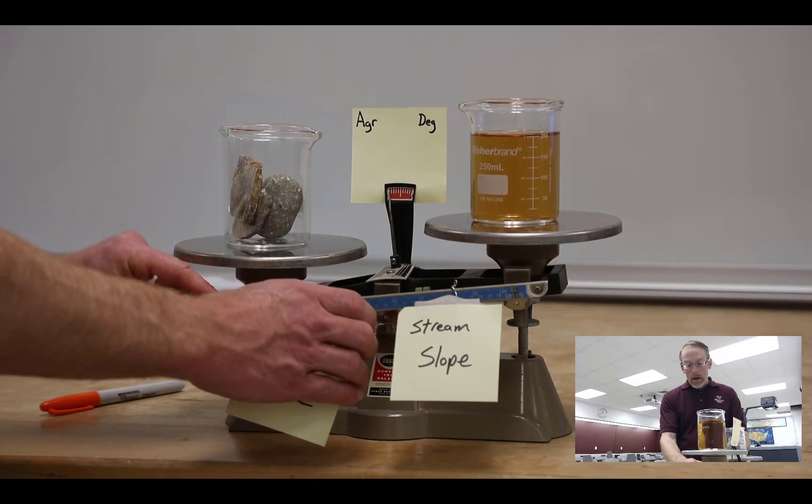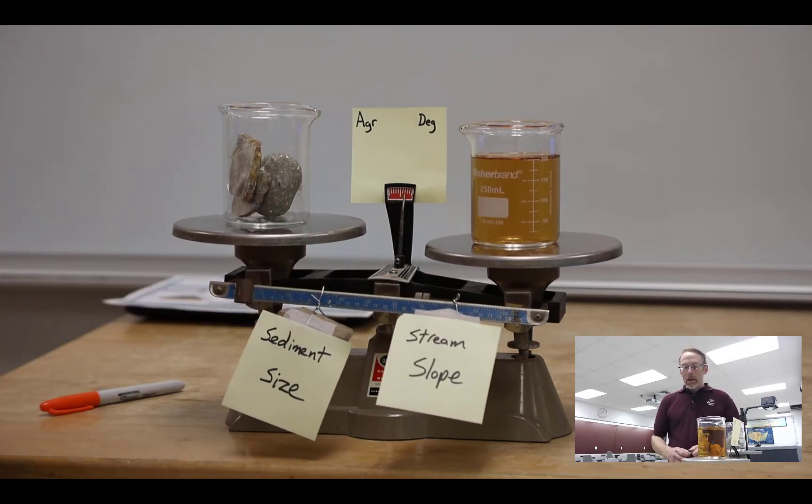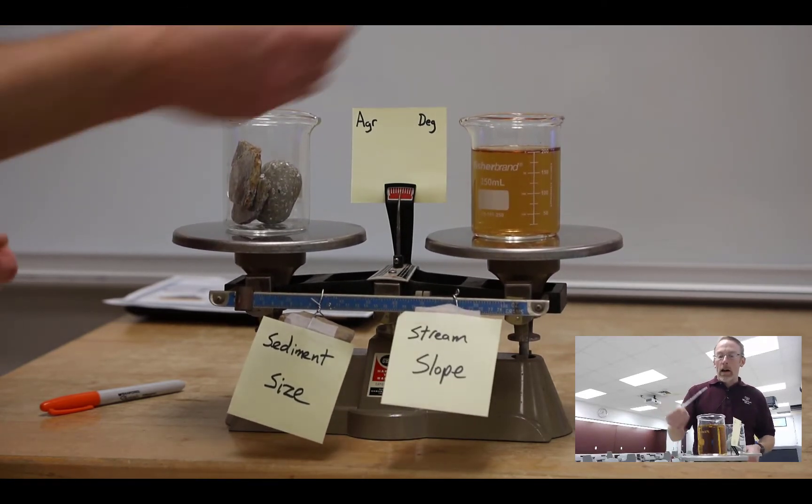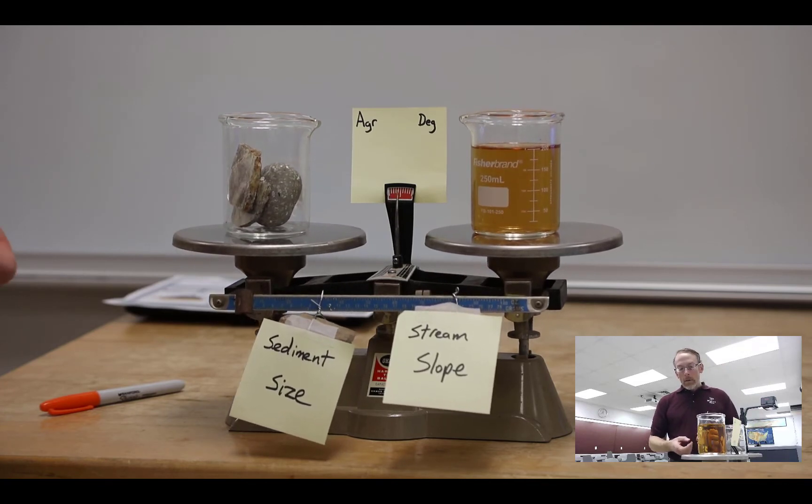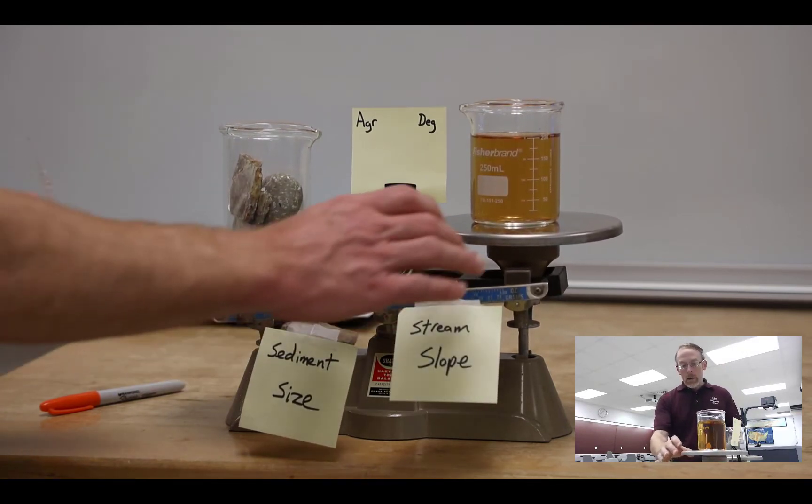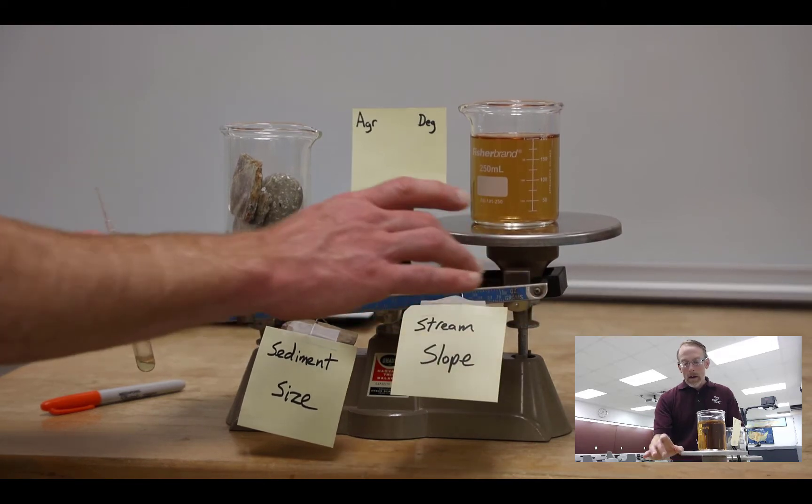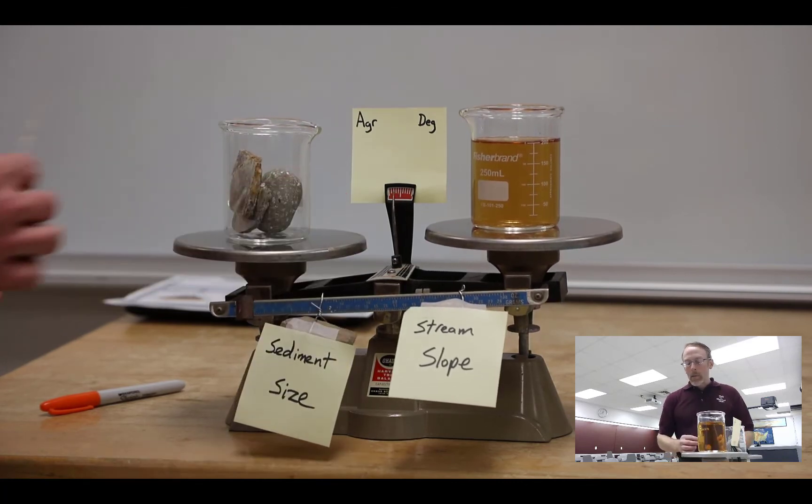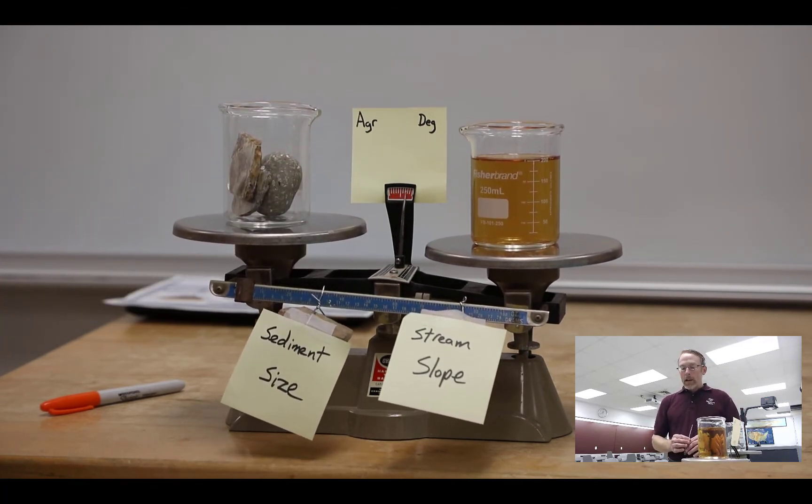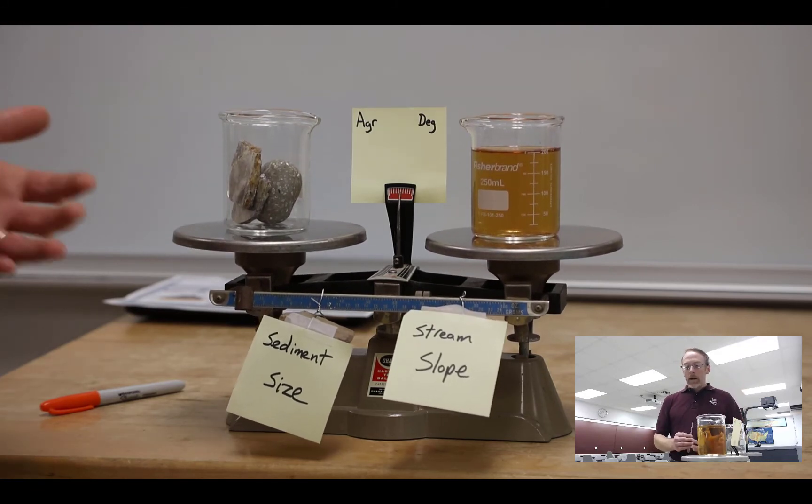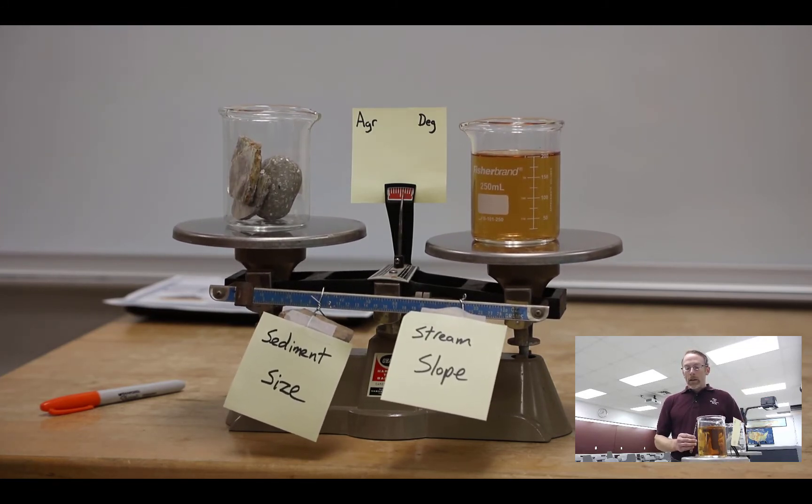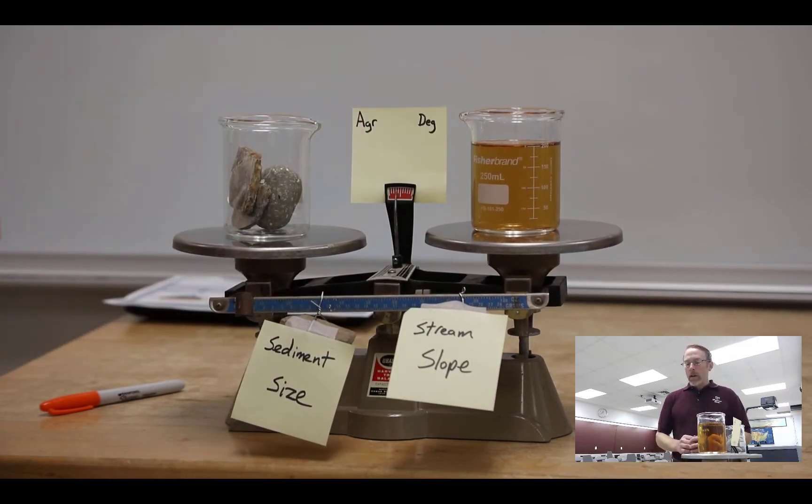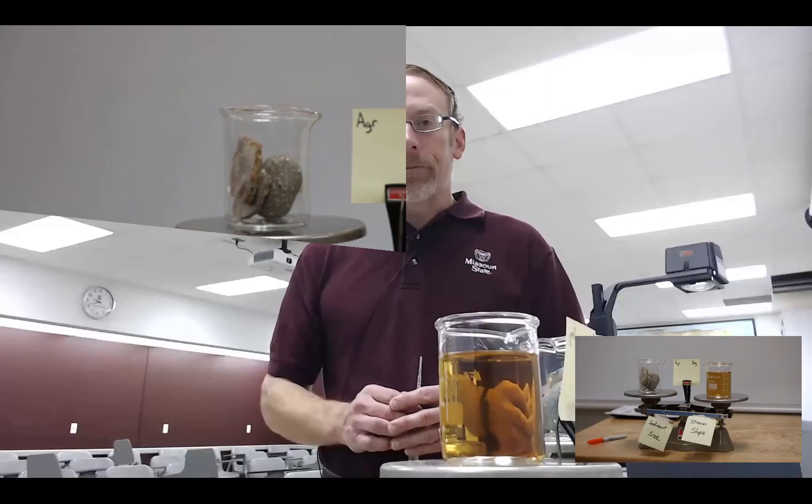What happens in a natural system is equilibrium. When you change one of these variables—say we take some water out of the system—some other part of the system's going to adjust. Maybe the stream slope will steepen to get the system back into equilibrium, meaning putting the dial back in the middle. This can't happen instantaneously. If we change one of these variables, it's going to take some time for the system to adjust, and the adjustment will occur by tweaking all of these other variables in the system.